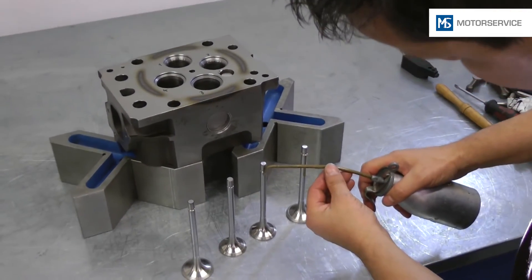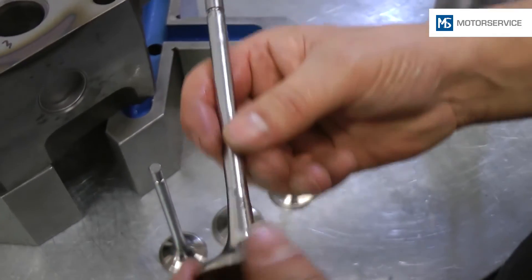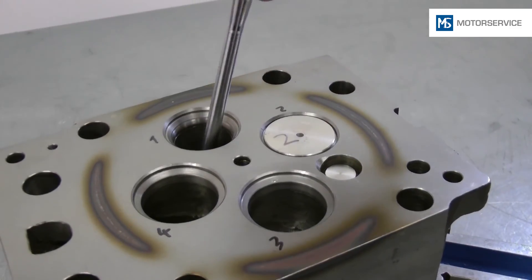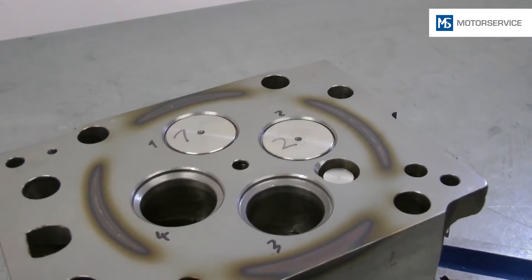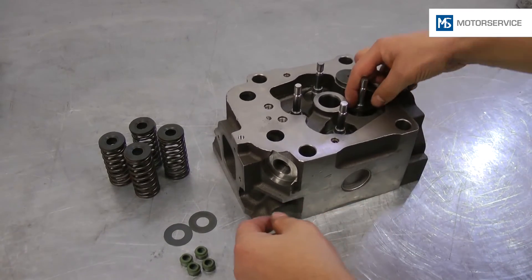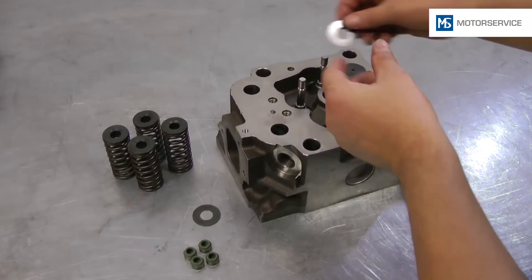Before assembling the valve stem seals, the valves are oiled and moved into the valve guides. Before the valve stem seals are assembled, the washers or valve rotators must be inserted.